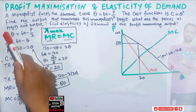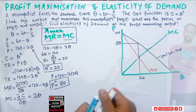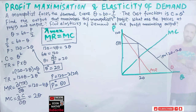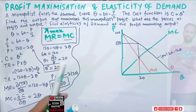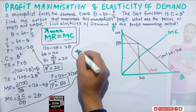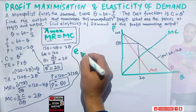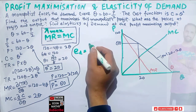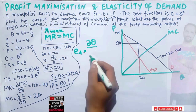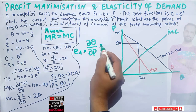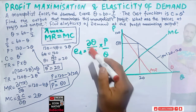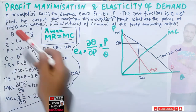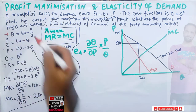Now we have the profit-maximizing output q = 20 and price p = 80. Next we need to find the elasticity of demand at the profit-maximizing output. The formula for elasticity of demand is: E_d = (dq/dp) × (p/q), where dq/dp is the derivative of the ordinary demand function with respect to price.